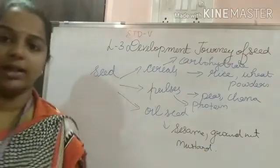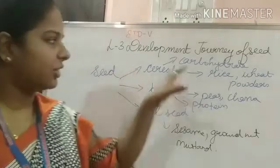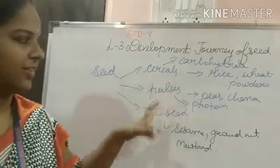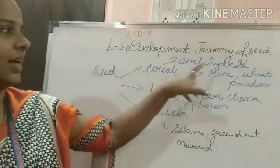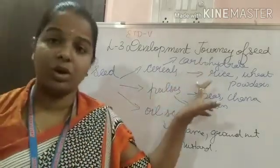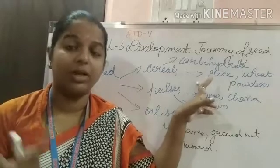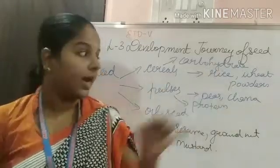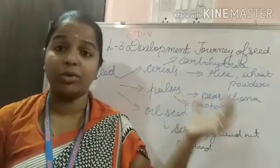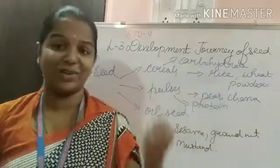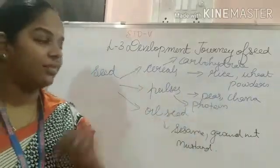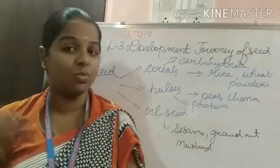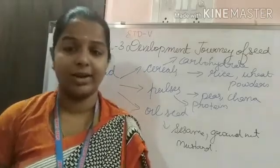So to summarize: seeds are divided into three categories — cereals, pulses, and oil seeds. Cereals cannot be divided into two equal halves; when divided they become powder; examples are rice and wheat. Pulses divide into two equal halves; examples are peas and chana; pulses contain more protein. Oil seeds contain oil and fats. Now let's move to the next topic: monocots and dicots.